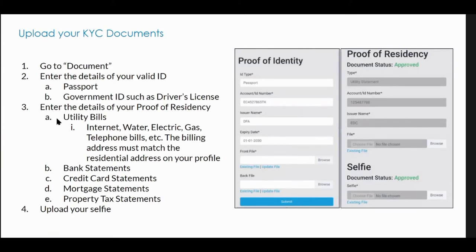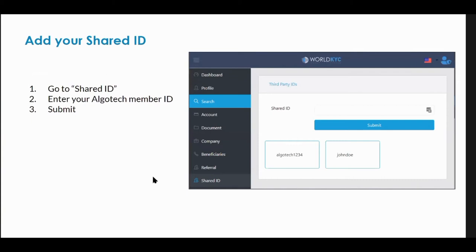You can also enter the details of your proof of residency — that could be a bank statement, credit card statement, and so forth — and you upload your selfie. Something made to be simple. Then our staff, who are going through regulatory training to be AML compliance people working with other financial institutions, will review your process, create your profile, and approve it.